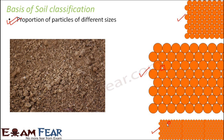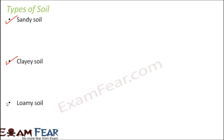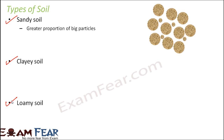Any soil is made up of a mixture of particles — some big, some small, and some medium sized. Depending upon how many big, small, and medium sized particles are present, soil has been classified into three types: sandy soil, clayey soil, and loamy soil.